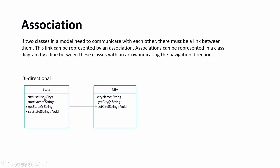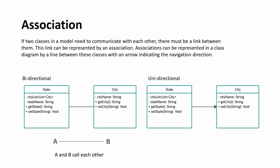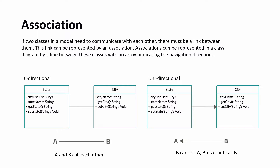For example, let's take the classes State and City — a state has many cities and a city belongs to one state. Bidirectional association means both classes have access to each other, represented by a plain line between them, meaning A and B can call each other. In unidirectional association, State has access to City but City does not have access to State. This is represented with an arrow, meaning B can call A but A cannot call B.